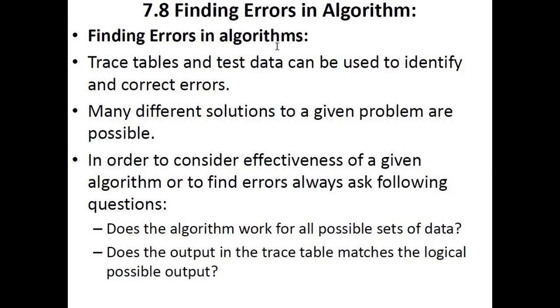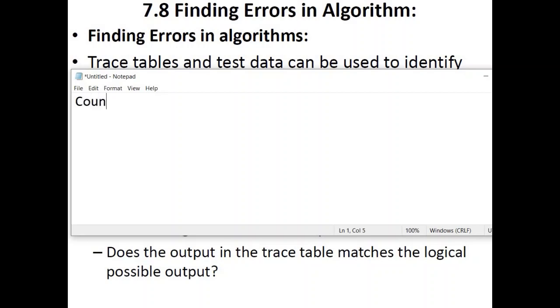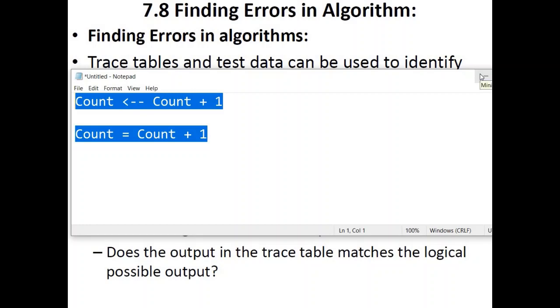Remember one thing: normally we use assignment operators. We write something like count equals count plus one, or we write it like this. But this is not the only way. It's possible the examiner would write it like count arrow count plus one. Do not identify this as an error. The examiner sometimes gives pseudocode that is slightly different than the format you are used to in Cambridge O Levels. Do not penalize it, do not identify it as an error. Always go for sensible or more visible errors.